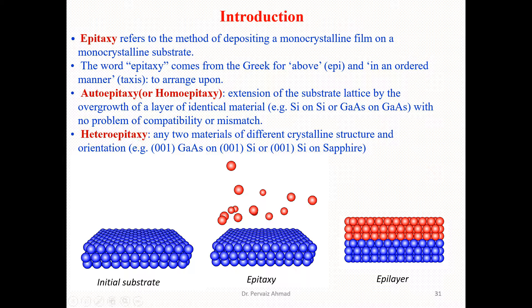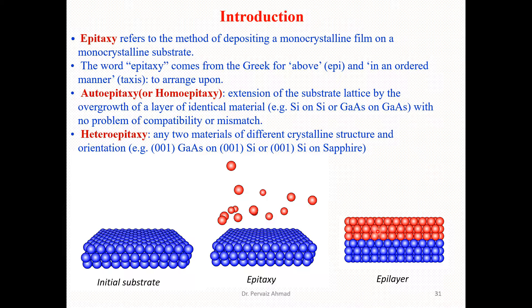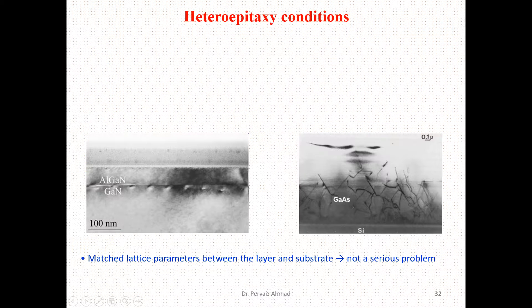Here you can see a formal diagram illustrating the concept of epitaxy. We have an initial substrate, and atoms are coming in and forming layers on top of the substrate. You can see the epi layers that have been deposited at the top of the substrate, and the arrangement of atoms is according to the definitions we have discussed.